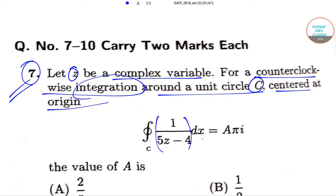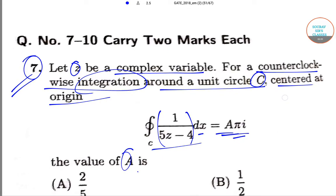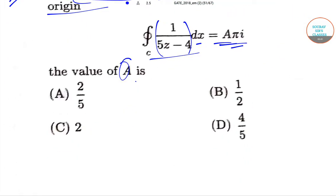It has been introduced when the integration of this value is equal to A pi i. In that case, we need to find out the value of A. The options for the values of A are: (A) 2 by 5, (B) 1 by 2, (C) 2, and (D) 4 by 5.